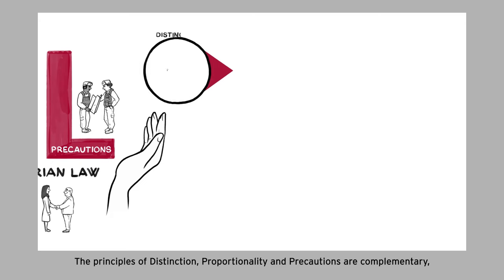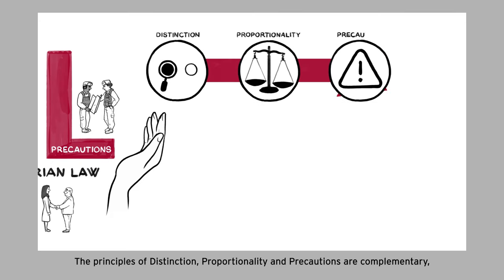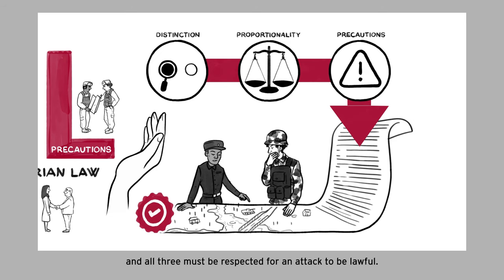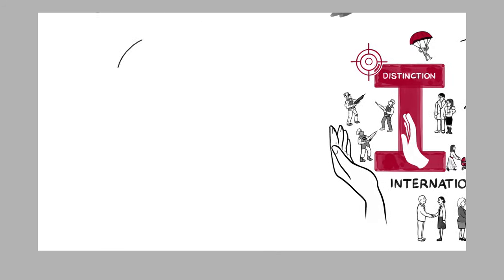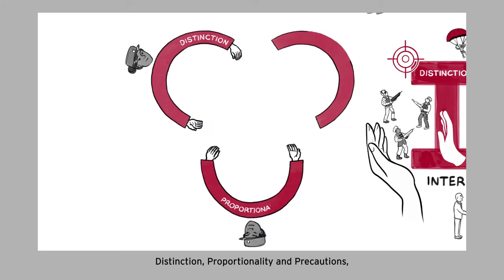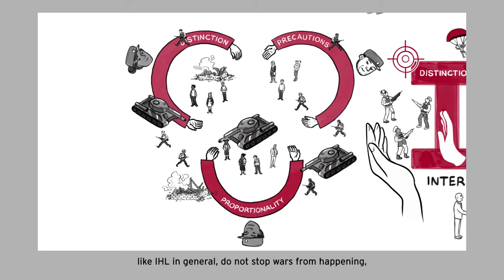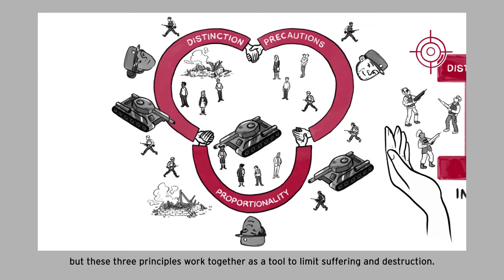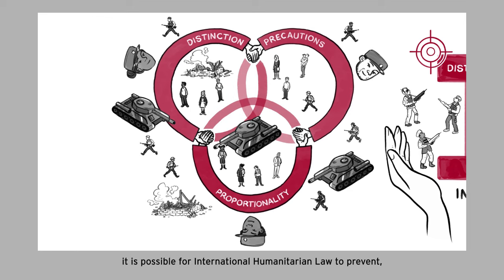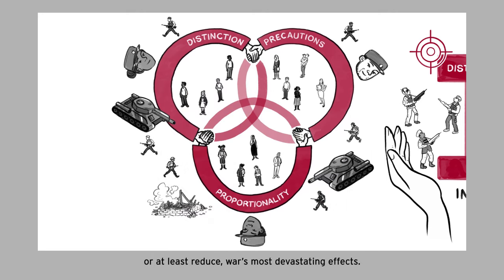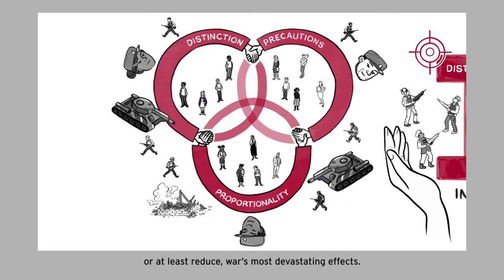The principles of distinction, proportionality, and precautions are complementary, and all three must be respected for an attack to be lawful. Distinction, proportionality, and precautions, like IHL in general, do not stop wars from happening, but these three principles work together as a tool to limit suffering and destruction. By outlining rules for the conduct of hostilities, it is possible for international humanitarian law to prevent, or at least reduce, war's most devastating effects.